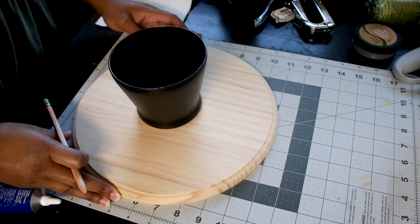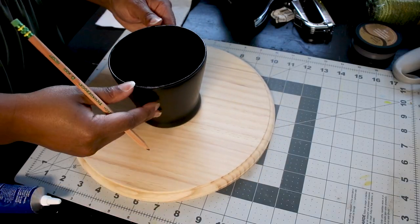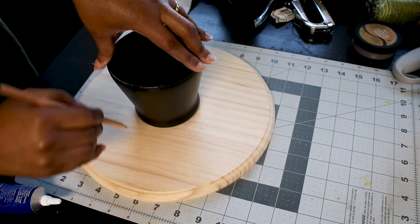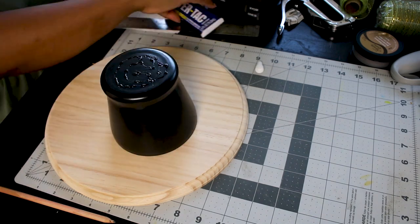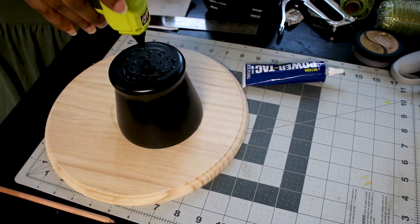You will want to sand any rough spots on these. Just note that. I marked the center and used some heavy-duty glue as well as hot glue to attach the vase to the round.